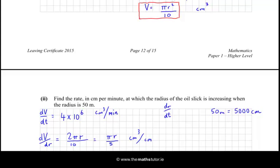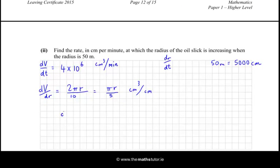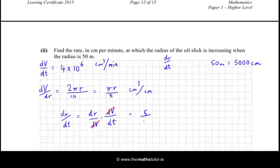What we want is dr/dt. Using the chain rule: dr/dt equals dr/dV times dV/dt, and the dV's cancel to leave dr/dt. So dr/dV is 5 over pi r, because dV/dr is pi r over 5. And dV/dt is 4 by 10 to the power of 6. So dr/dt equals 5 over pi r, multiplied by 4 by 10 to the power of 6.